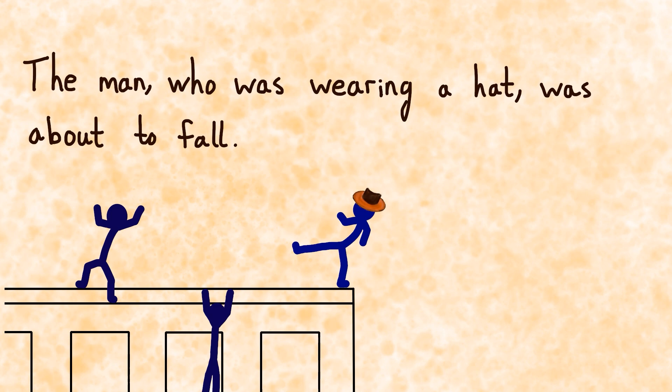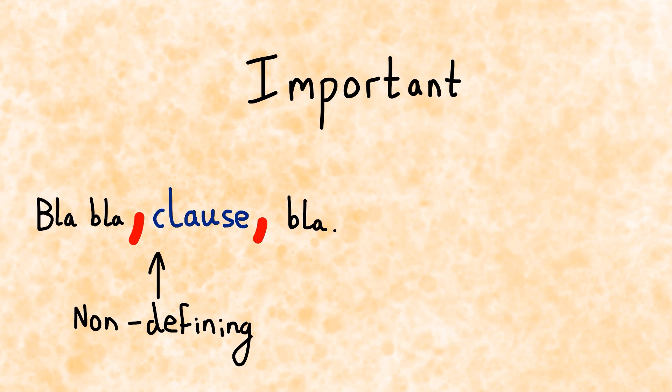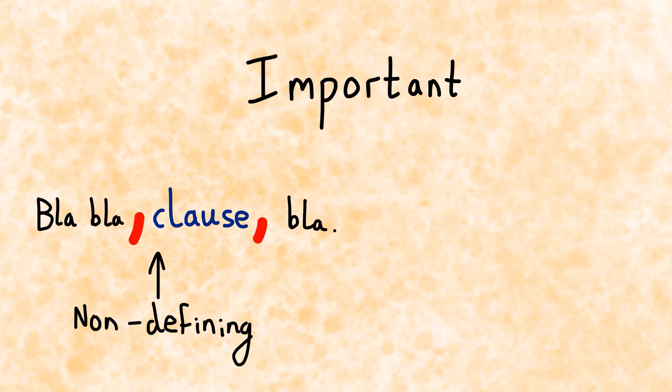It might seem strange that a simple comma can change the meaning of a sentence, but that is the case with defining and non-defining relative clauses. So what you need to remember is, if the clause is between commas, it's non-defining, and if it's not between commas, it's defining.